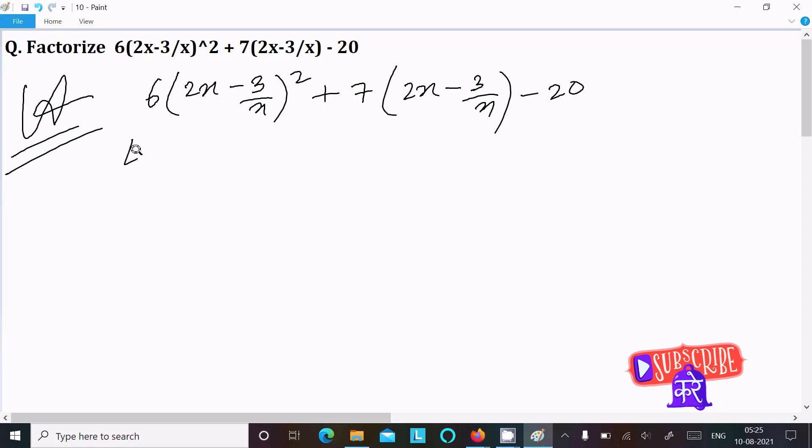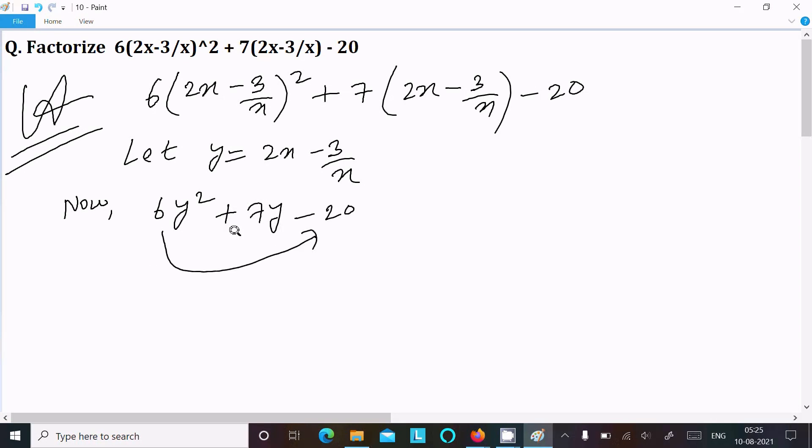We can easily achieve the output if I assume y equal to 2x - 3/x. Now writing 6y² + 7y - 20. Now thereafter multiply first term with the last term, so writing here 6y² into -20, so it comes to -120y².